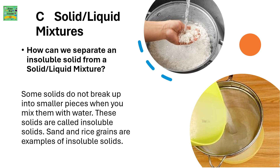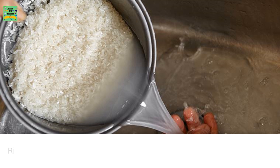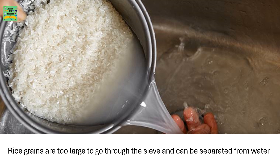Solid or liquid mixtures. How can we separate an insoluble solid from a solid or liquid mixture? Some solids do not break up into smaller pieces when you mix them with water. These solids are called insoluble solids. Sand and rice grains are examples of insoluble solids. Rice grains are too large to go through the sieve and can be separated from water, since the water will be flowing through the sieve into the container.